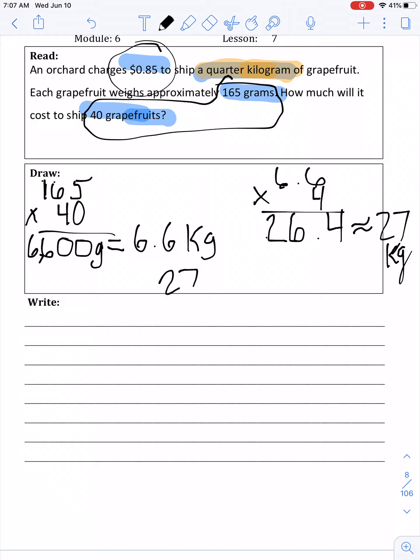So we have 27 kilograms. 85 cents times 27 kilograms. 7 times 5 is 35. 5 times 5 is 39. 5 times 2 is 10. Carry the 1. 8 times 2 is 16, plus 1 is 17. 5, 9, 12, 2. And our decimal. So the cost to ship 40 grapefruits is $22.95.